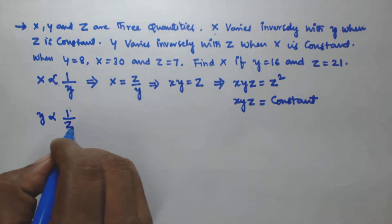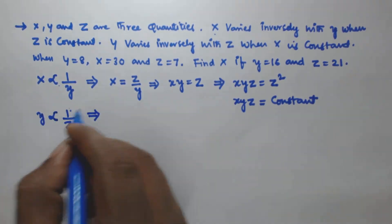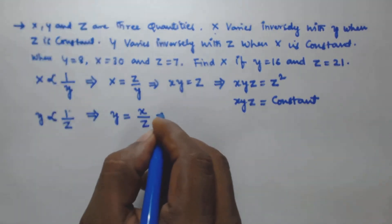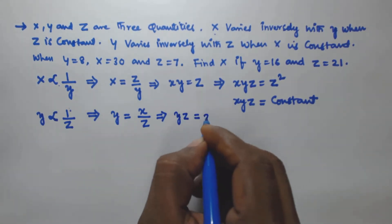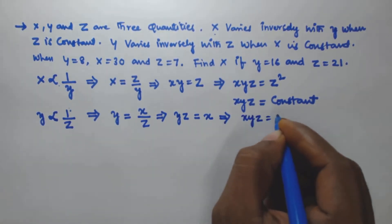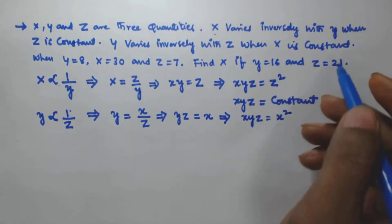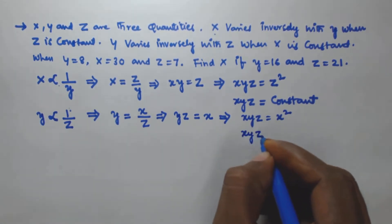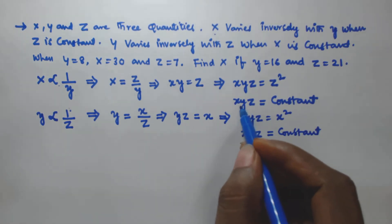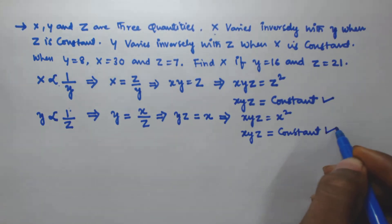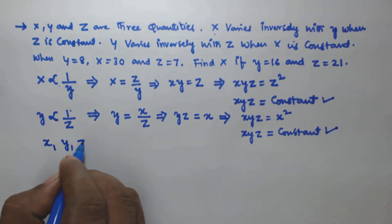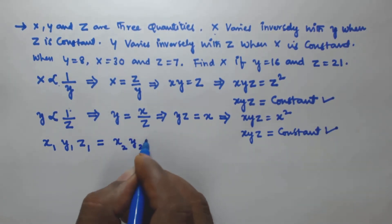In the second case, y varies inversely with z when x is constant. To remove the inversely proportional, we add the constant x, so y is equal to x divided by z. This implies y·z is equal to x. Multiplying both sides by x gives x·y·z equal to x squared. Since x is constant, x squared is also constant, so x·y·z equals a constant. From both cases we get x·y·z equals a constant, so we can write x₁·y₁·z₁ is equal to x₂·y₂·z₂.